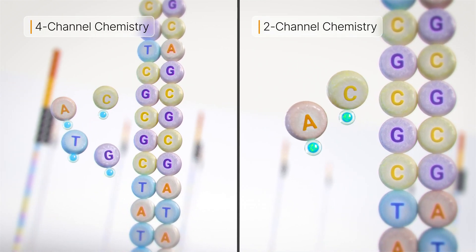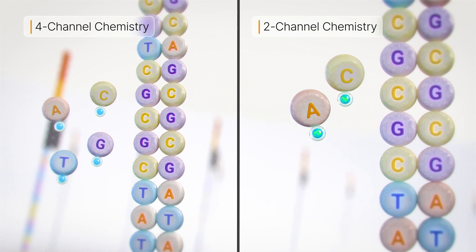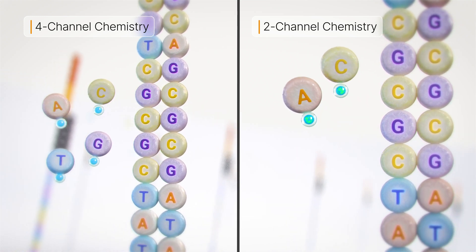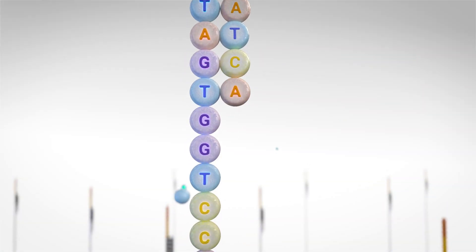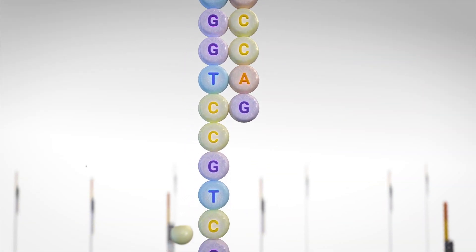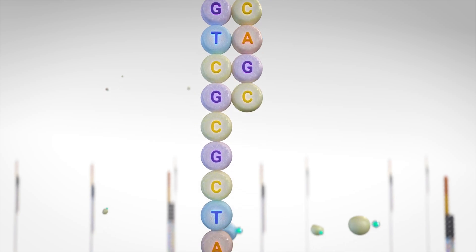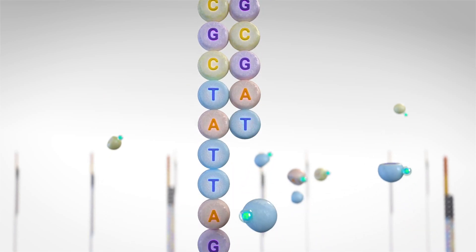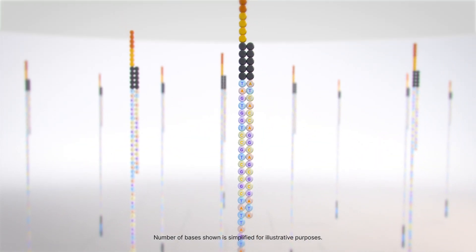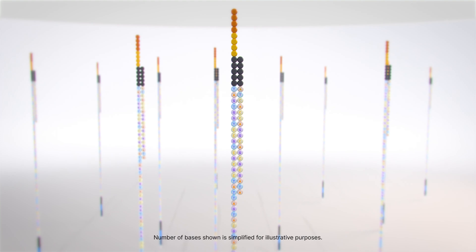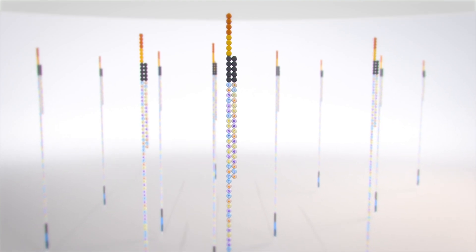New X-leap SBS chemistry further improves the speed and accuracy of the two channel detection approach through an improved block and linker and a new polymerase engineered to incorporate nucleotides faster and with higher fidelity. This delivers up to two times faster incorporation rates relative to standard SBS.